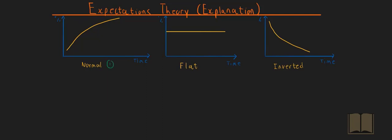So the first yield curve, called a normal yield curve, is when interest rates are expected to increase in the future. The second yield curve, called a flat yield curve, is when there is no difference between interest rates in the short term and the long term.